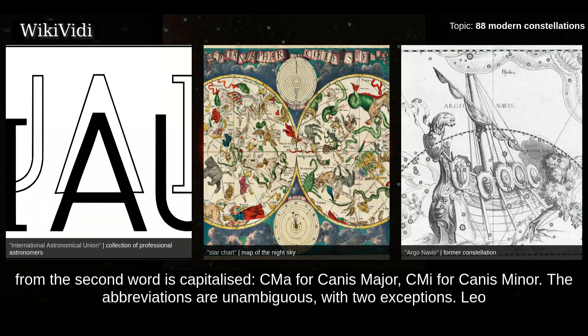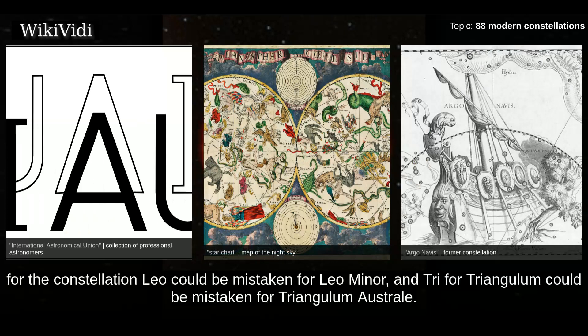The abbreviations are unambiguous, with two exceptions. Leo for the constellation Leo could be mistaken for Leo Minor, and Tri for Triangulum could be mistaken for Triangulum Australe.